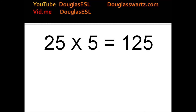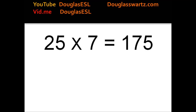25 times 5 equals 125. 25 times 6 equals 150. 25 times 7 equals 175.